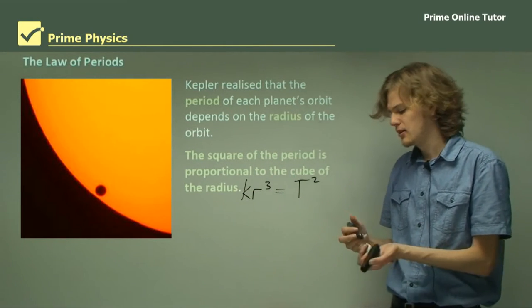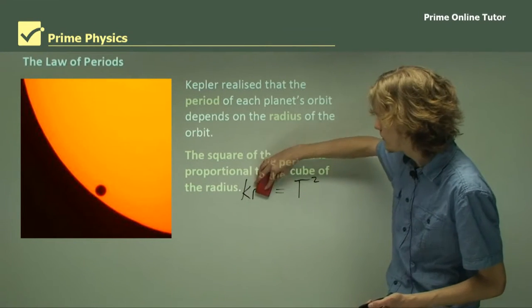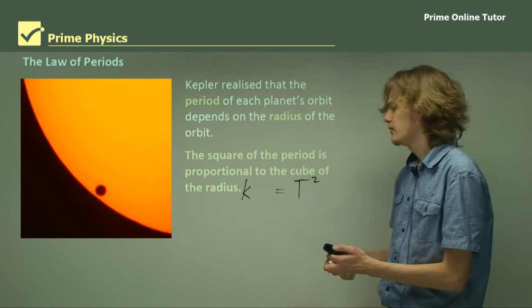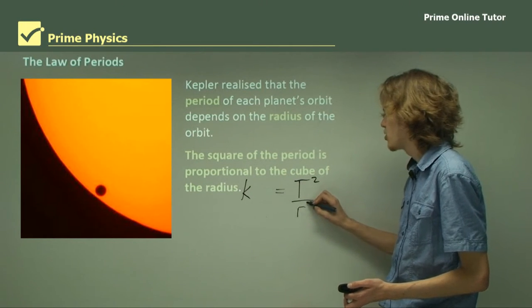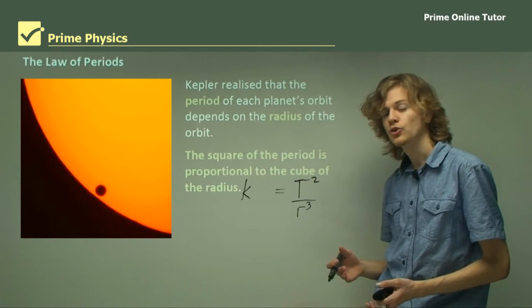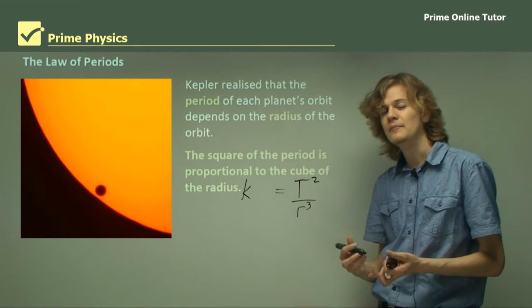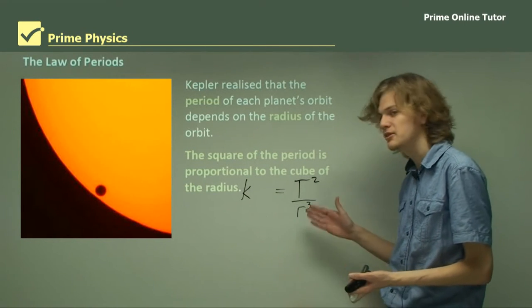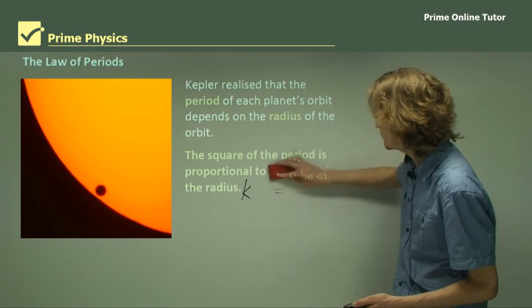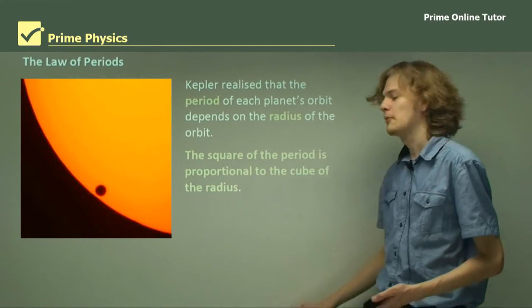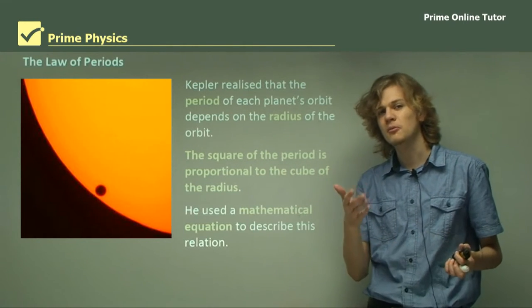We can rearrange this by dividing both sides by R cubed, to say that this equation on the right here, T²/R³, must be a constant. For different planets that have different periods and different radii, you can compare them to each other and make predictions based on this relationship, because this will be the same for every planet around the sun.